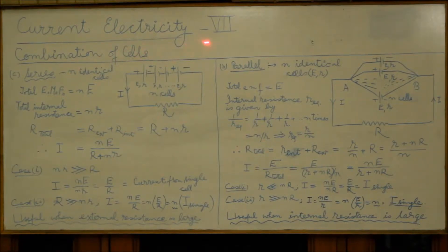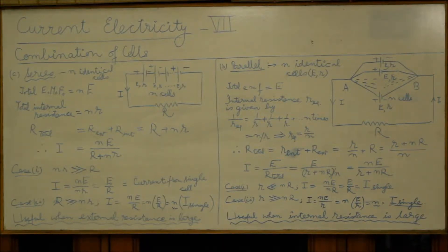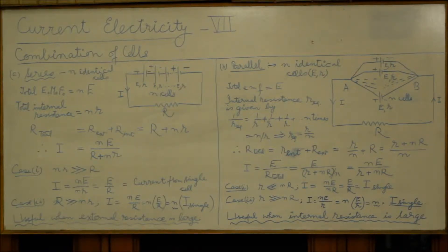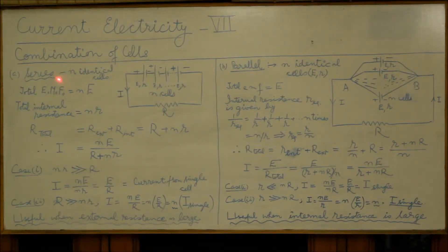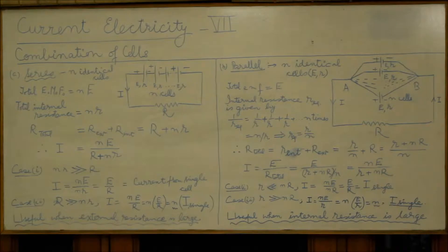In the present video, current electricity part 7, we will be studying about combination of cells. There are situations where a single cell provides very small amount of current. In order to get the desired large current, we combine cells. A combination of cells called a battery may consist of cells combined in series, end-to-end, or cells combined in parallel.